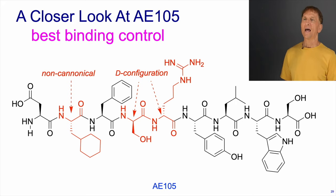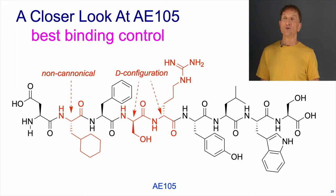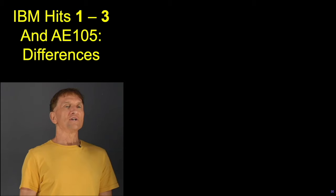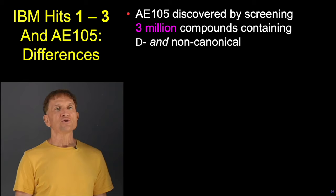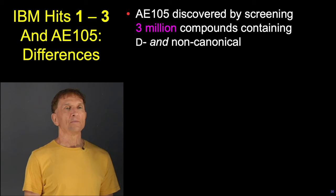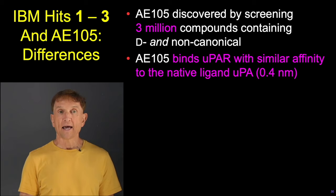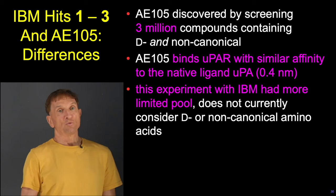Let's look a bit closer at AE105. It's the best-binding control I know of; it contains a non-canonical amino acid and a D-amino acid. What's the origin of AE105? AE105 was discovered in a split-synthesis screening of 3 million compounds containing D and non-canonical amino acids. It binds UPAR with a similar affinity to the native ligand UPA, which is 0.04 nanomolar.